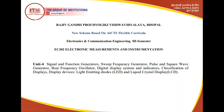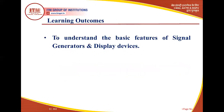Our next unit covers signal and function generators — how signals are generated, what types of signals exist, such as square waves or sinusoidal waves. We can see how display systems work — what LCD display systems and LED display systems are. The learning outcome of this unit is to understand how to generate signals using signal generators and how digital devices represent their outputs.